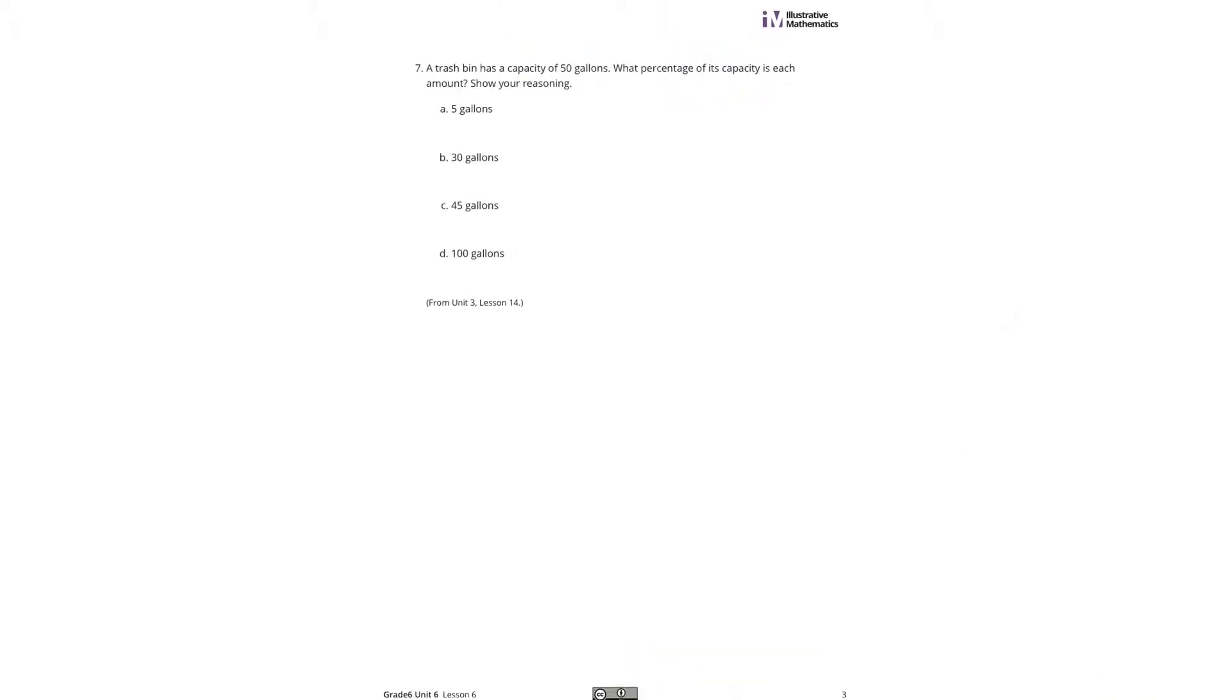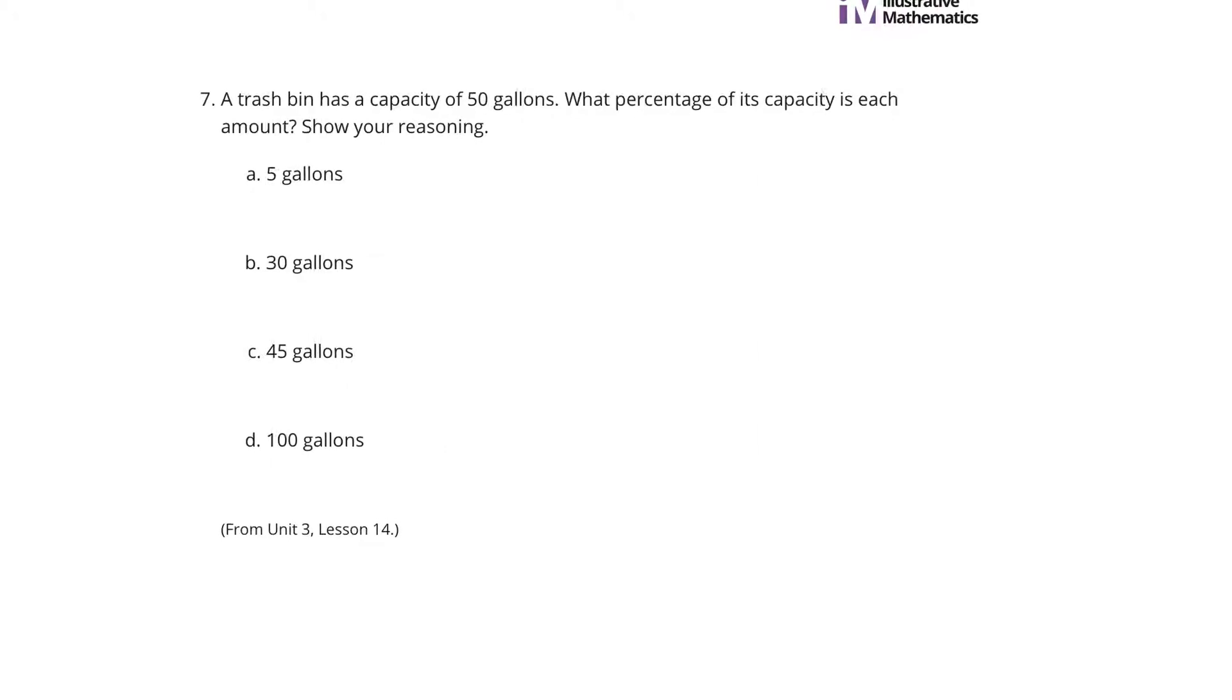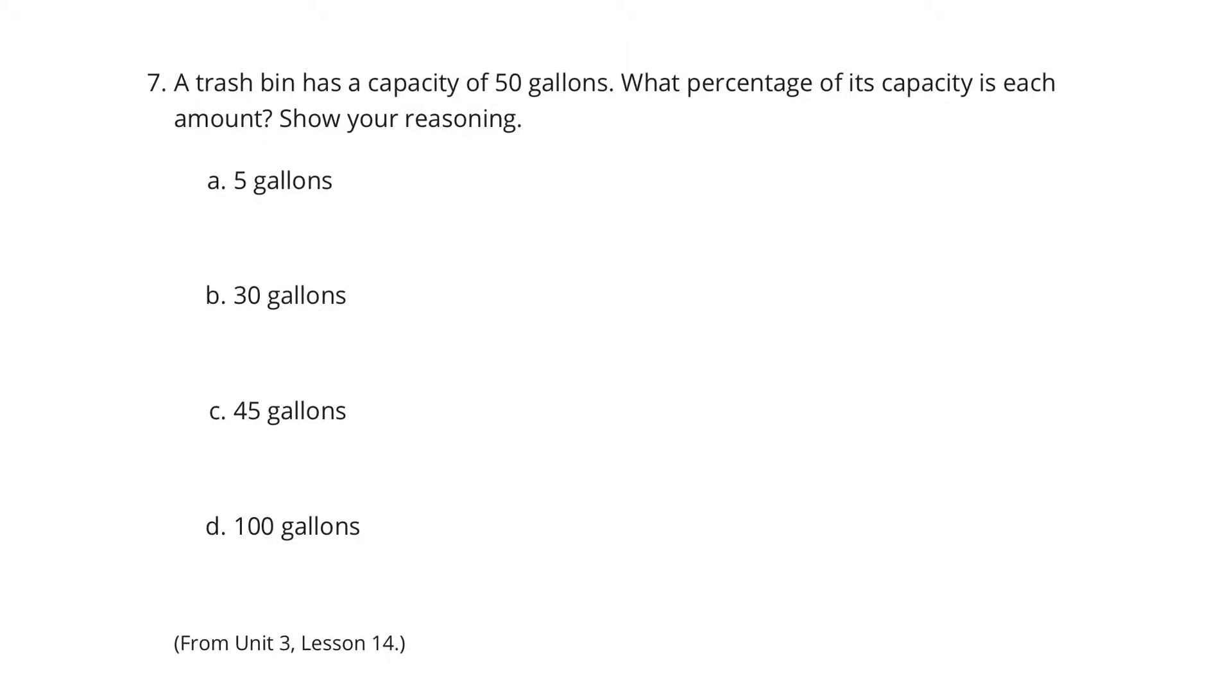Now lastly, a trash bin has a capacity of 50 gallons. What percentage of its capacity is each amount? Show your reasoning. Well, we're looking here at 5 over 50, which if I write that as a fraction over 100, I can multiply the bottom by 2. The top by 2 gives me 10 out of 100, which is 10%.